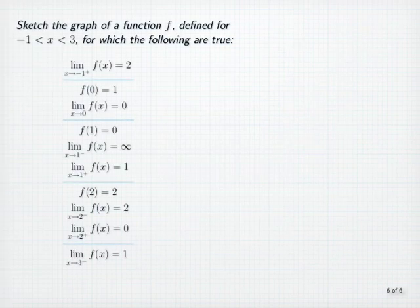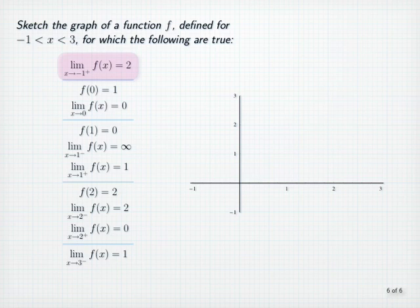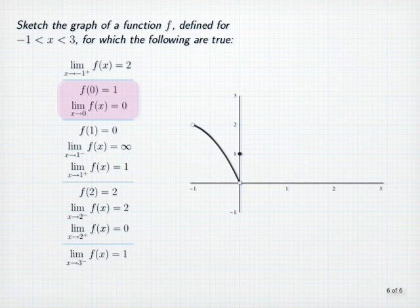In this example exercise, we want to sketch the graph of a function f, defined for x greater than minus 1 and less than 3, so that the list of conditions concerning limits and/or values at x equal to minus 1, 0, 1, 2, and 3 are true. Let's begin at the left endpoint and work our way from left to right. f of negative 1 is undefined, and the right-sided limit as x approaches negative 1 is 2, so near negative 1, the graph might look something like this. Since f of 0 is 1, we'll plot the point 0, 1, and since the limit as x approaches 0 is 0, the graph might look something like this between negative 1 and 0.